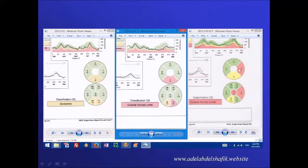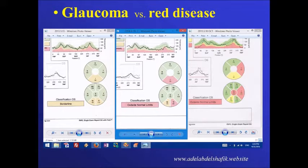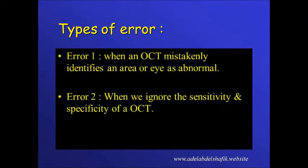The problem comes when we take it for granted that every red or yellow area is an abnormality, because if we do so, we may end by treating red disease instead of treating real glaucoma. The source of error can be due to an OCT machine mistakenly identifying an area or an eye as abnormal, or when we ignore that the sensitivity and specificity of the OCT machine is not perfect.